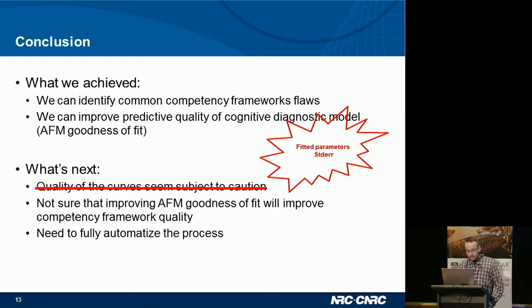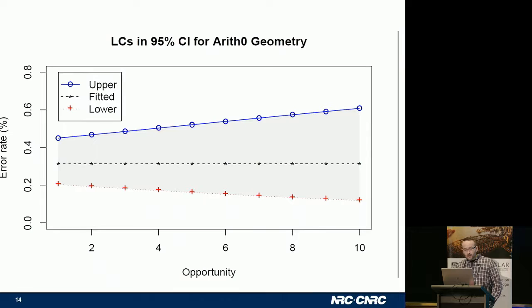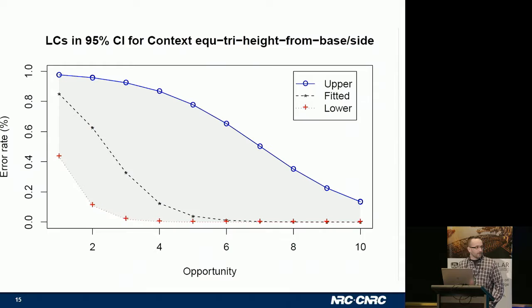What we would like at the end is to automate the process. Regarding standard errors, a paper has been submitted today to EDM to calculate standard errors on fitted parameters. We also discovered that inferring from a flat curve — where there appears to be no learning — is not straightforward, because as you can see with the red curve, we can still have a small amount of learning where we initially inferred none. In some situations we can be confident that learning is occurring; the uncertainty is about the pace at which it occurs.